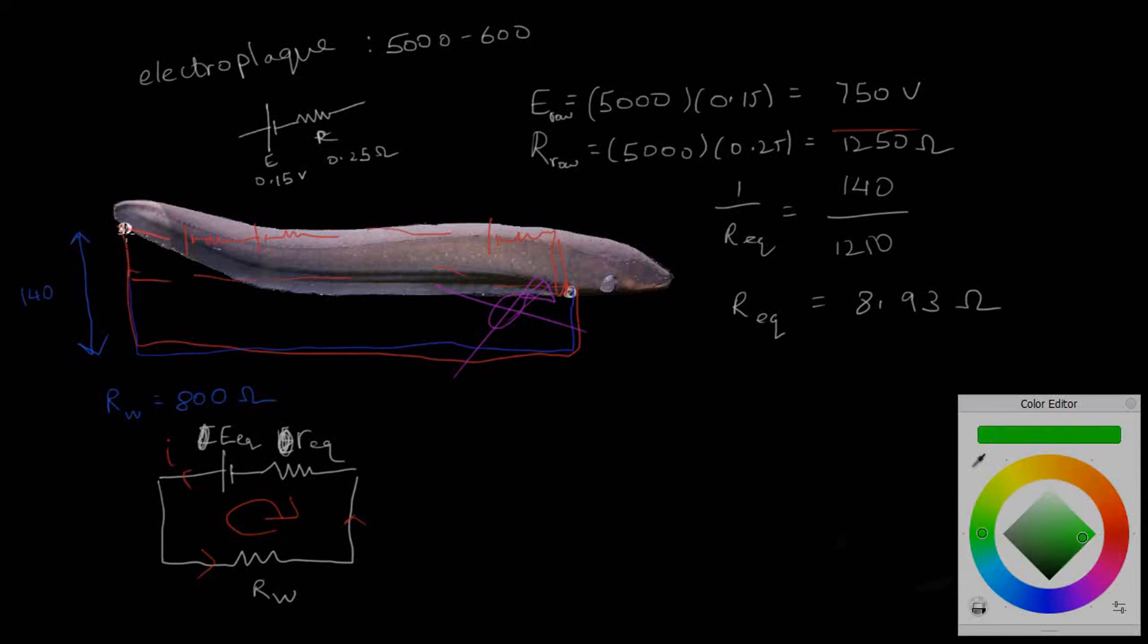We'll calculate this other value in green. Now the current splits across these various electroplaques, 140 of them to be precise. We found out the current to be 0.93 amps. In real life, this current is split into 140 of them, so the current is essentially split into 140 equal parts.